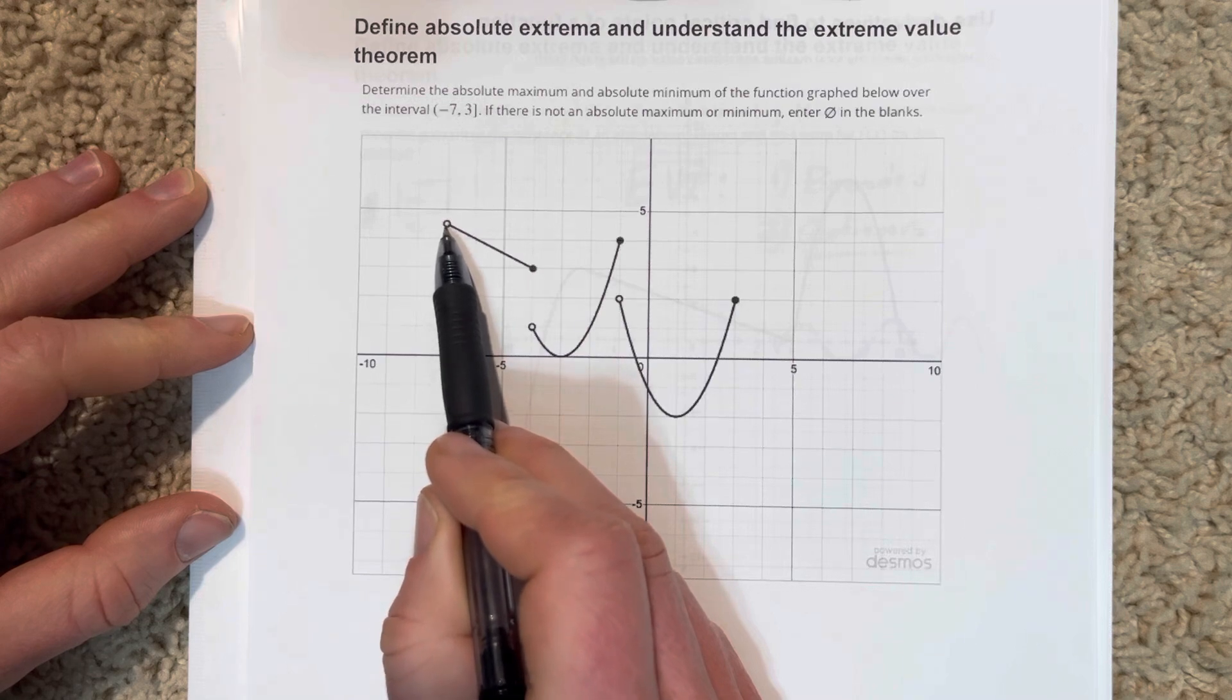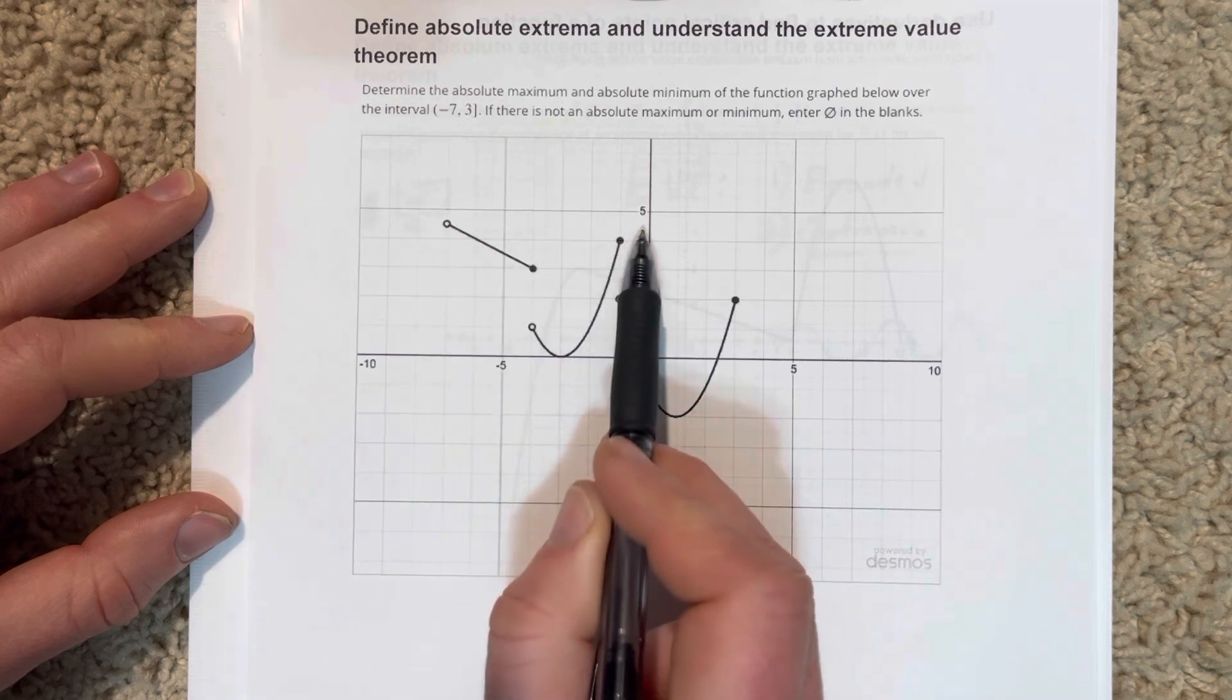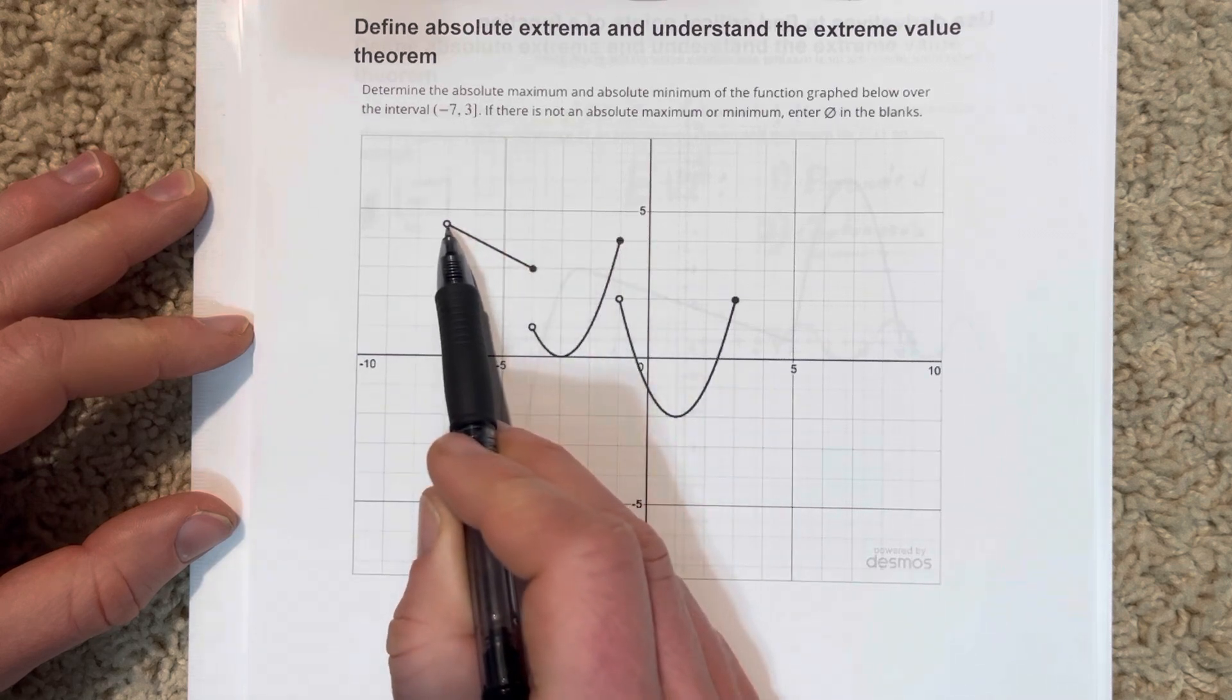but it's not defined. And that means that we can get really close to that point, but we're never going to touch it. So this is like 4.5, so this is like 4.49.